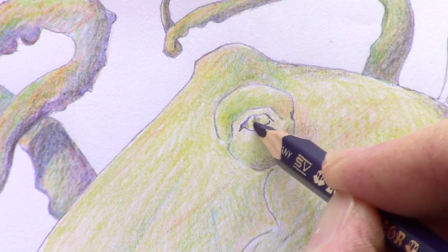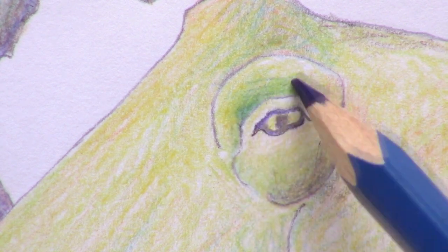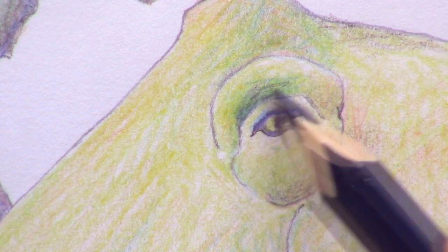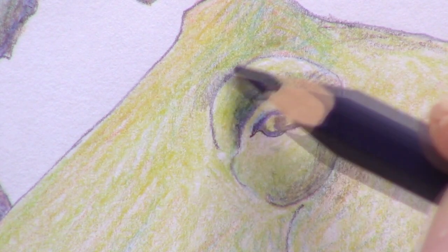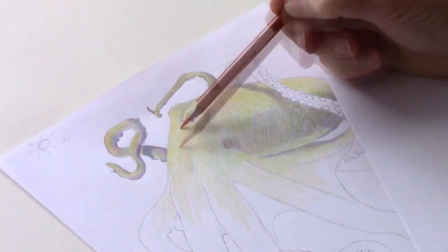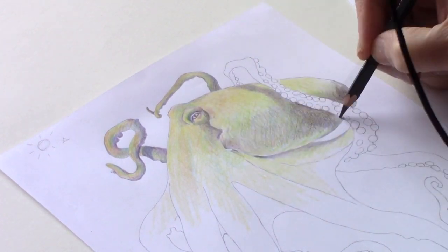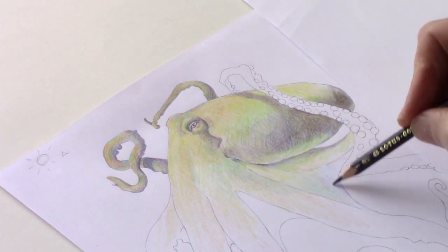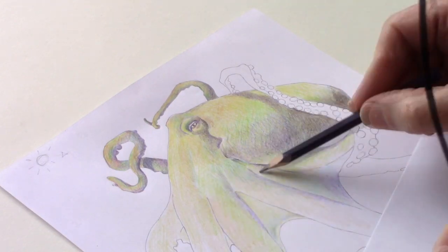Now I start to build up shadows and detail around the eye. Once I've done this, I continue to build up color and shadow on the rest of the octopus drawing.